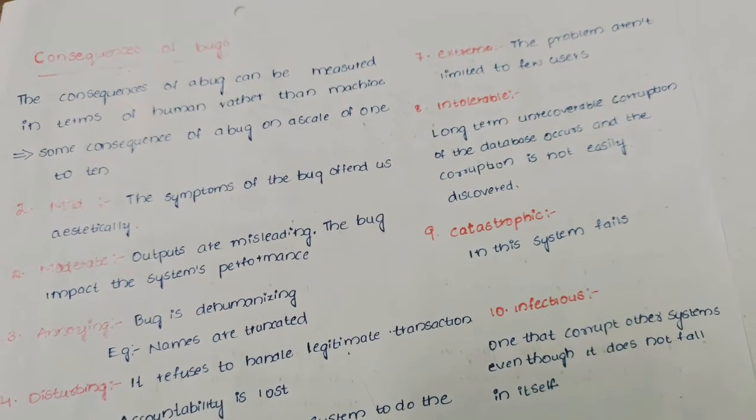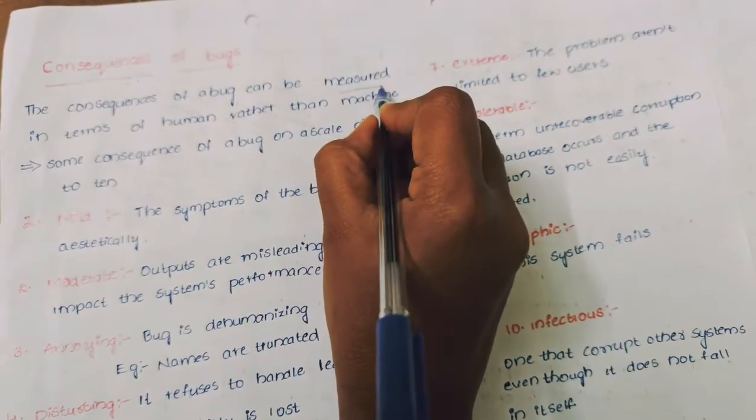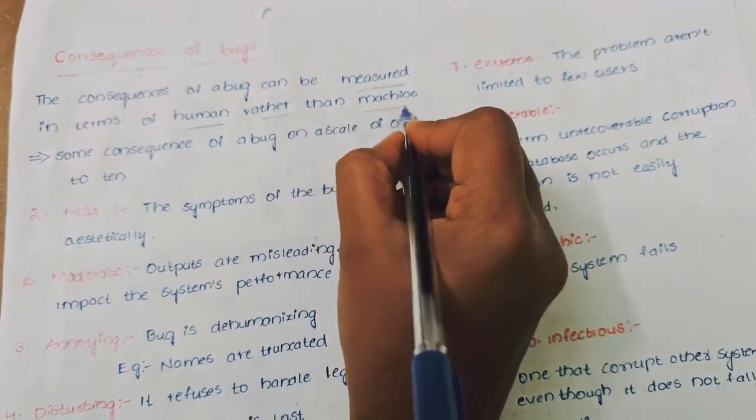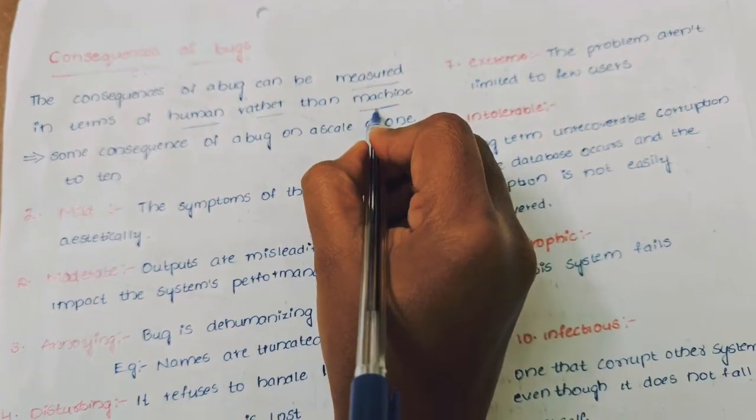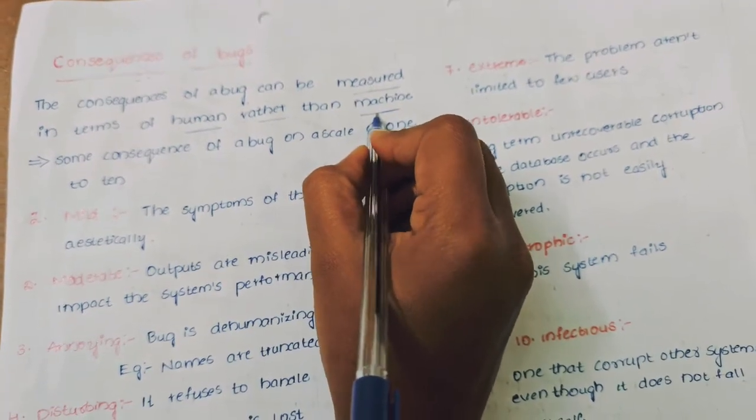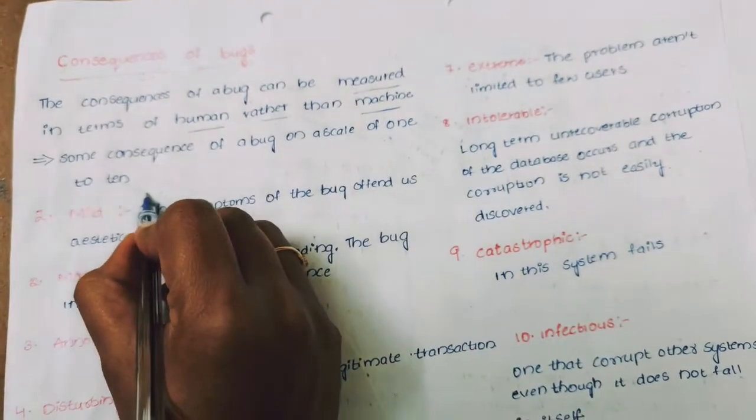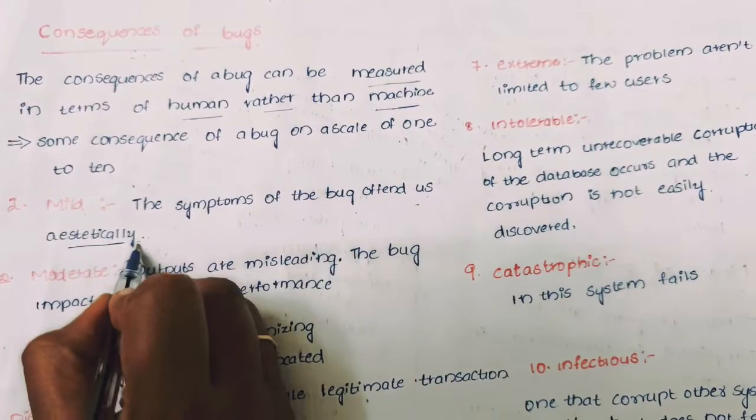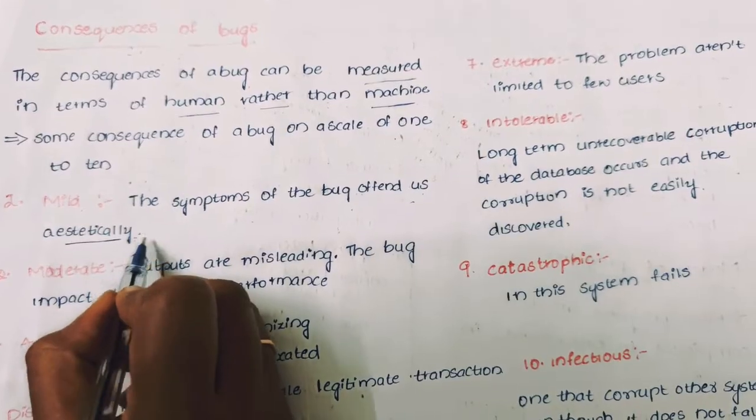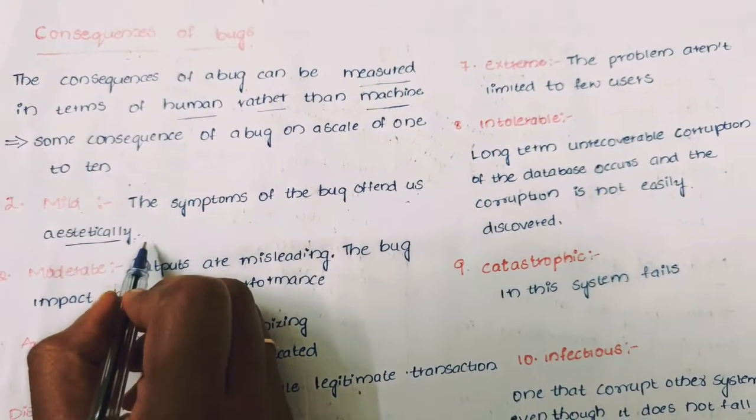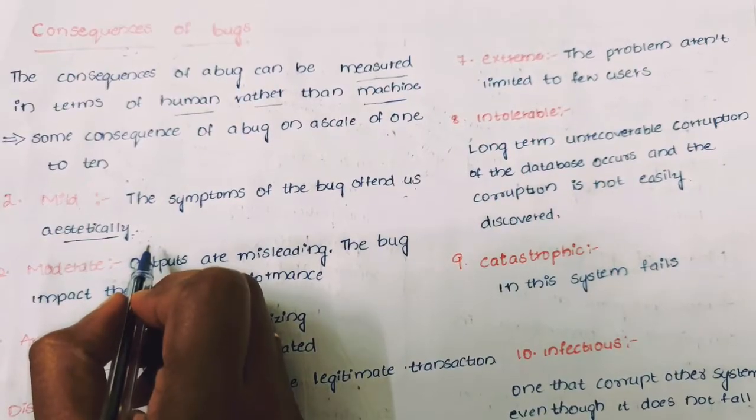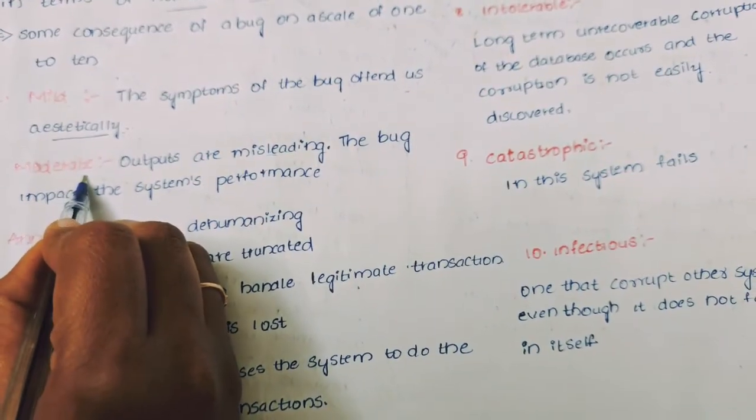The consequences of the bug can be measured in terms of human rather than machines. It can be measured on the scale in terms of 1 to 10. Mild: the symptoms of the bug are gentle. These are the mild bugs, not that much effective to the system.